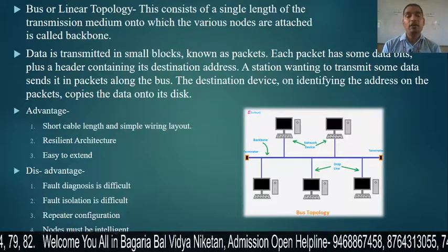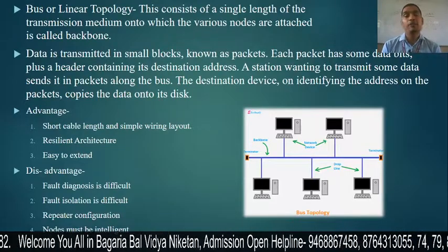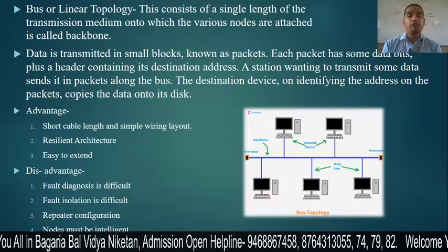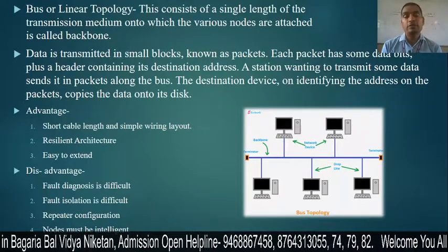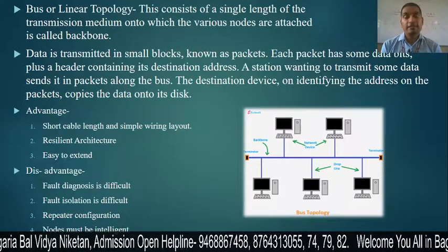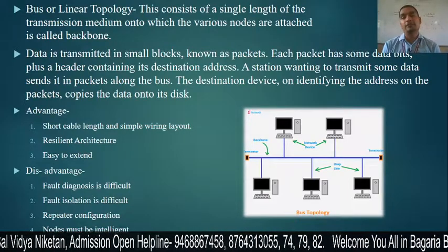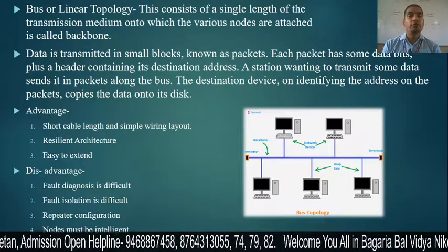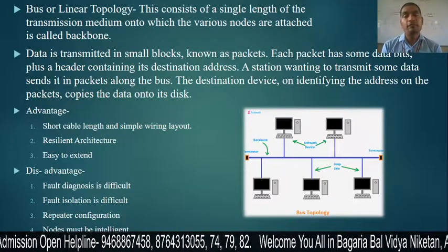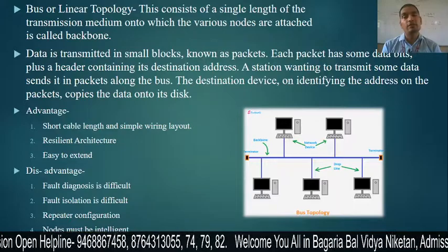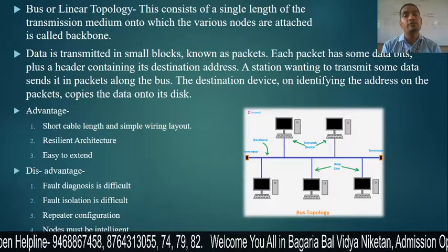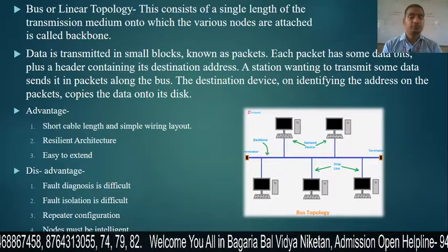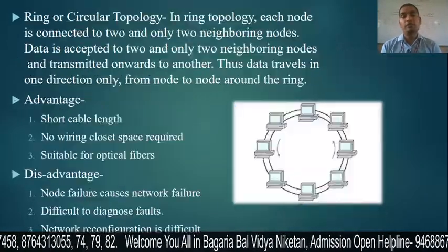Next disadvantage is that nodes must be intelligent. In bus topology, a data packet travels throughout the network and is not sent to a particular place. So the destination device must know that the data packet is for it. The node should be intelligent enough to identify and accept the packet addressed to it.